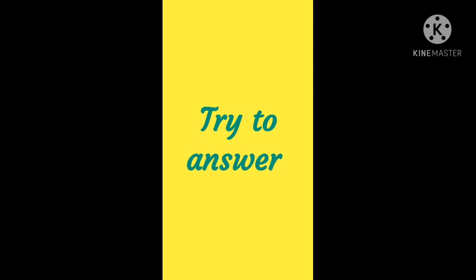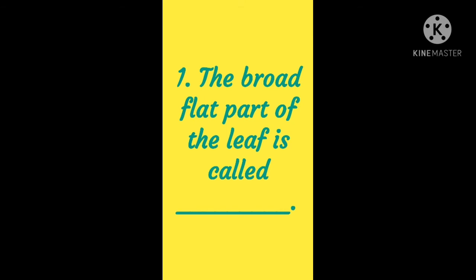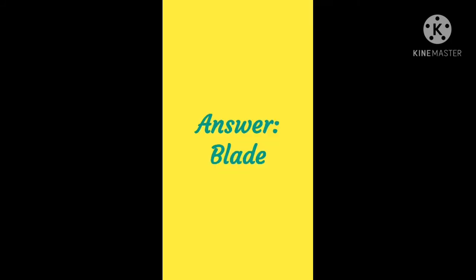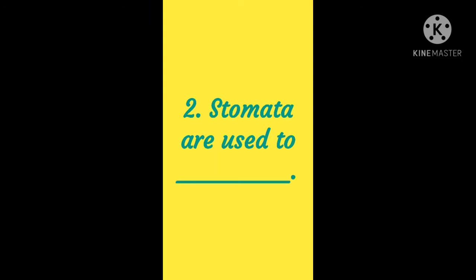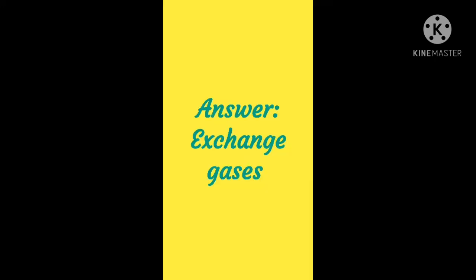I have a question for you, children — try to answer. First question: the broad flat part of the leaf is called blank. Think about it. Yes, the answer is blade. Second one: stomata are used to blank. The answer is exchange gas.